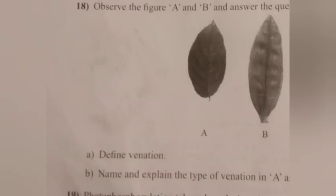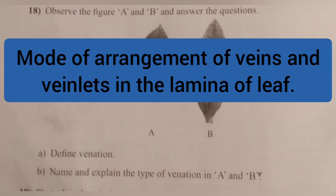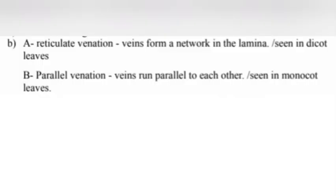Question 18. Observe the figures A and B and answer the questions. A. Define venation. Answer: Mode of arrangement of veins and veinlets in the lamina of a leaf. B. Name and explain the type of venation in A and B. Answer: A — Reticulate venation: veins form a network in the lamina, seen in dicot leaves. B — Parallel venation: veins run parallel to each other, seen in monocot leaves.